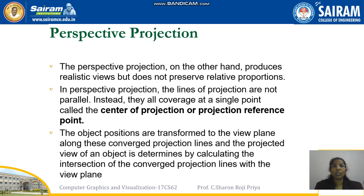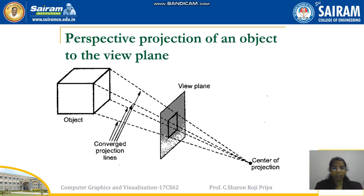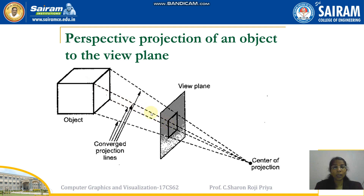In perspective projection, the distance between the camera and the object is finite. This camera point is called the center of lens. These straight lines are projection lines, and this is my view plane or projection plane where I get my image. From each vertex of the object, I draw straight lines passing through the view plane to the camera center.